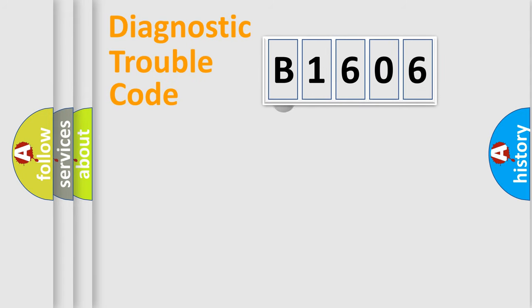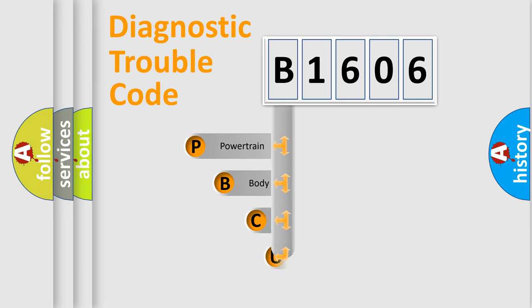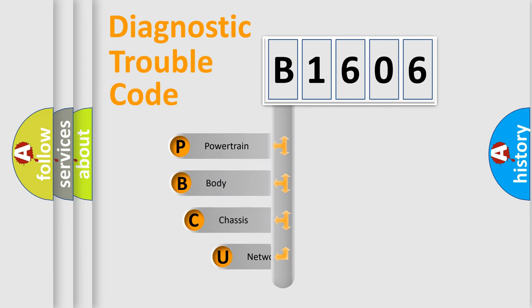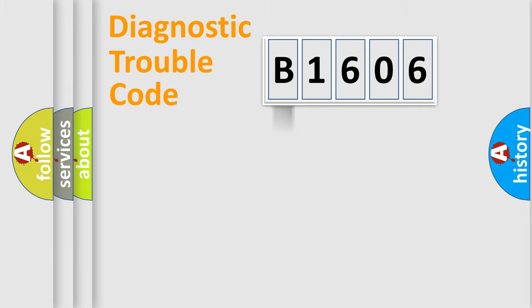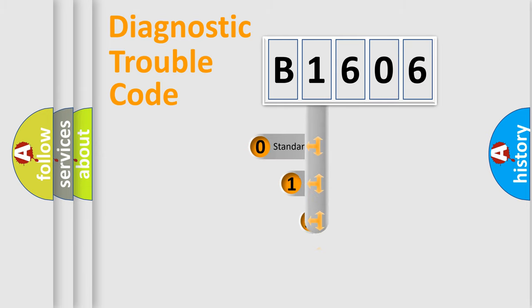First, let's look at the history of diagnostic fault code composition according to the OBD2 protocol. We divide the electric system of automobile into four basic units: powertrain, body, chassis, and network. This distribution is defined in the first character of the code.